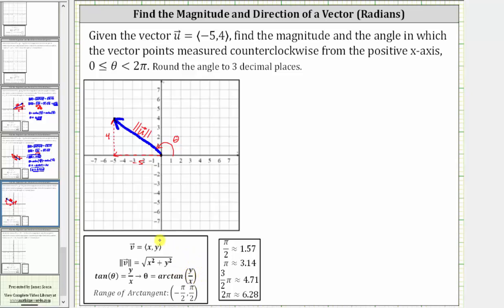We need to be careful though when determining the angle theta. Notice our angle is in the second quadrant, and the output or range of arctangent is the open interval from negative pi over two to positive pi over two. So we'll have to do some work to find our angle theta.